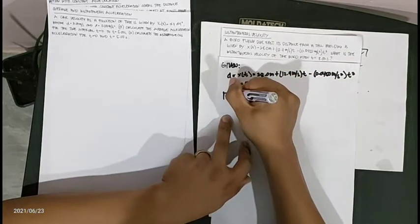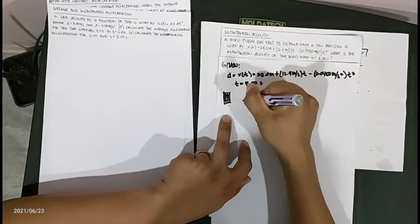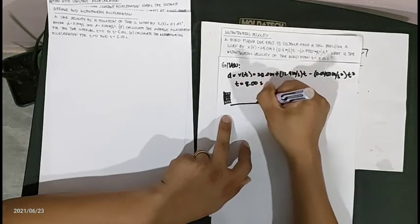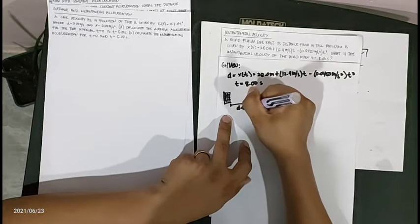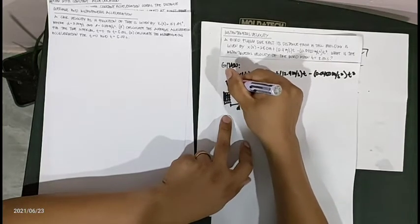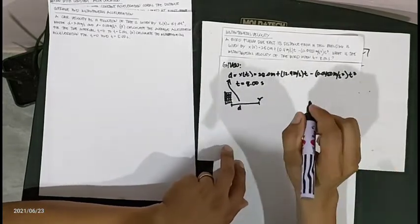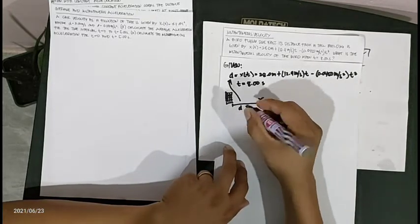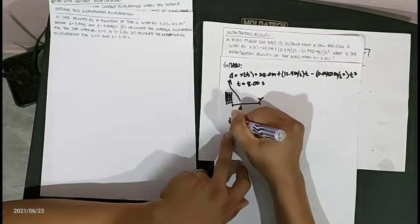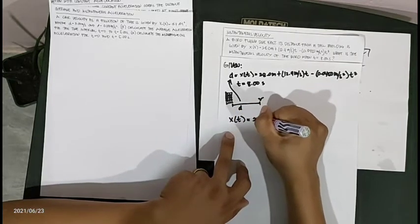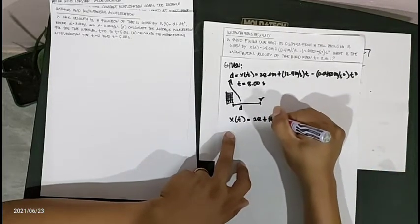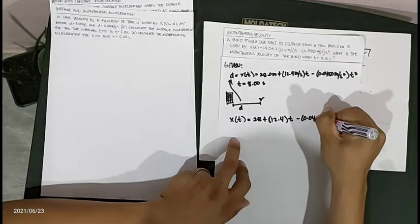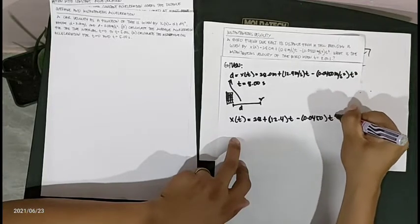The illustration shows a sample building with a bird flying from it, with the given distance function. The derivative of the displacement gives the velocity. So the equation is: x(t) equals 28 plus (12.4)t minus (0.0450)t cubed.